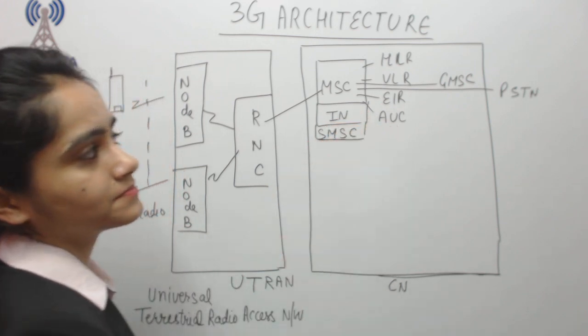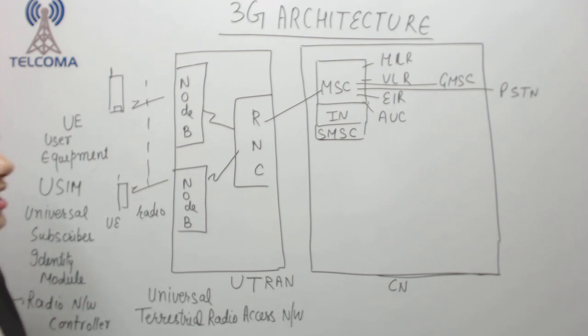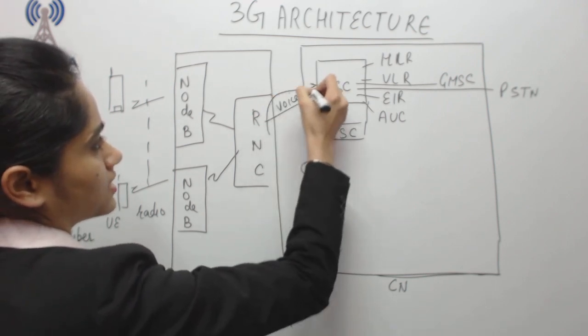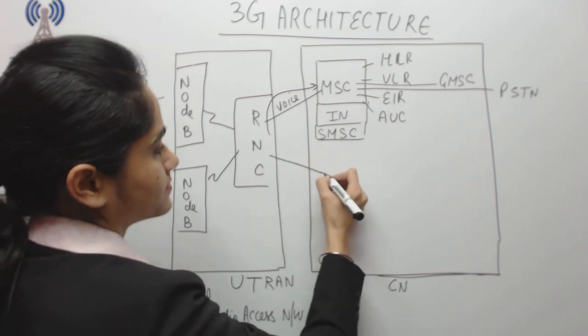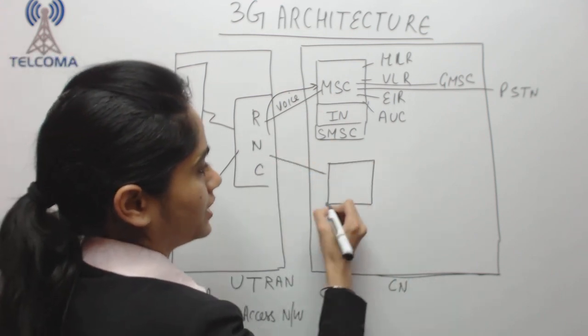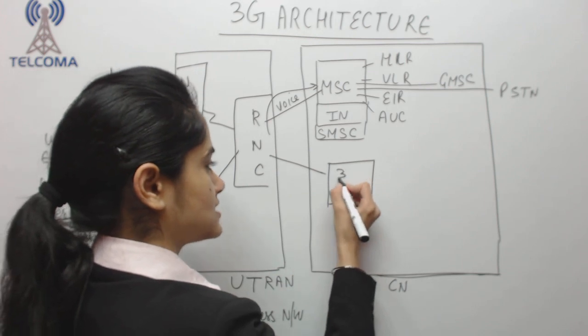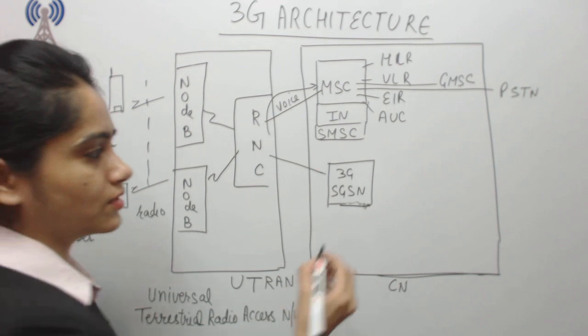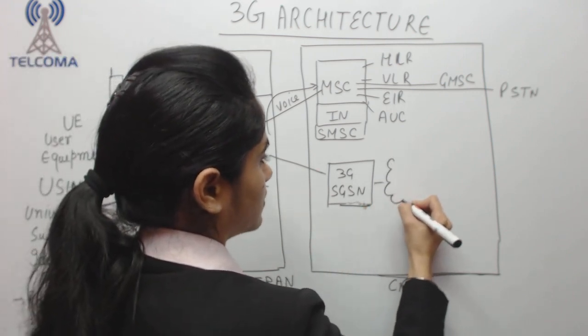So this is for voice; that means this is a path for voice. Now for data, we have this 3G SGSN, which is Serving GPRS Support Node. We have IP network.